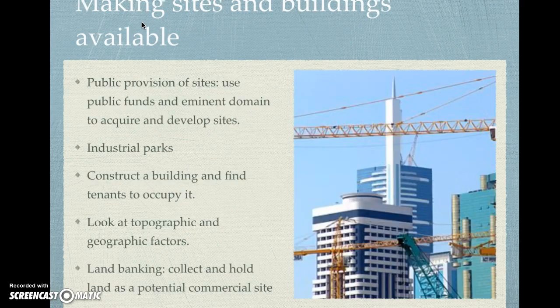Another tool is making sites and buildings available. This has to do with the public provision of sites — using public funds and possibly eminent domain to acquire and develop sites. Eminent domain is where the government can take control of private land if it's going to be used for a public good. One way this looks is industrial parks, where a city carves out specific larger sites designated for business development. Cities can also go as far as actually constructing a building and then finding tenants to occupy it.